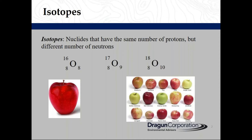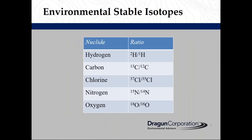An example I usually use to illustrate isotopes is apples — they're all apples but slightly different. These are the most common environmental isotopes in contaminant hydrogeology and their ratios, which are the ratios of heavy to light isotopes.